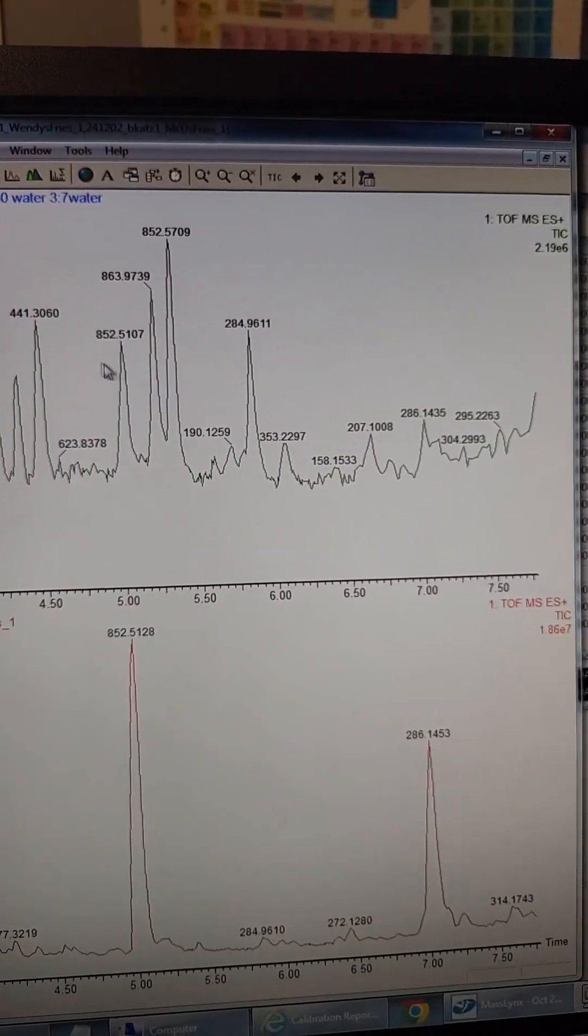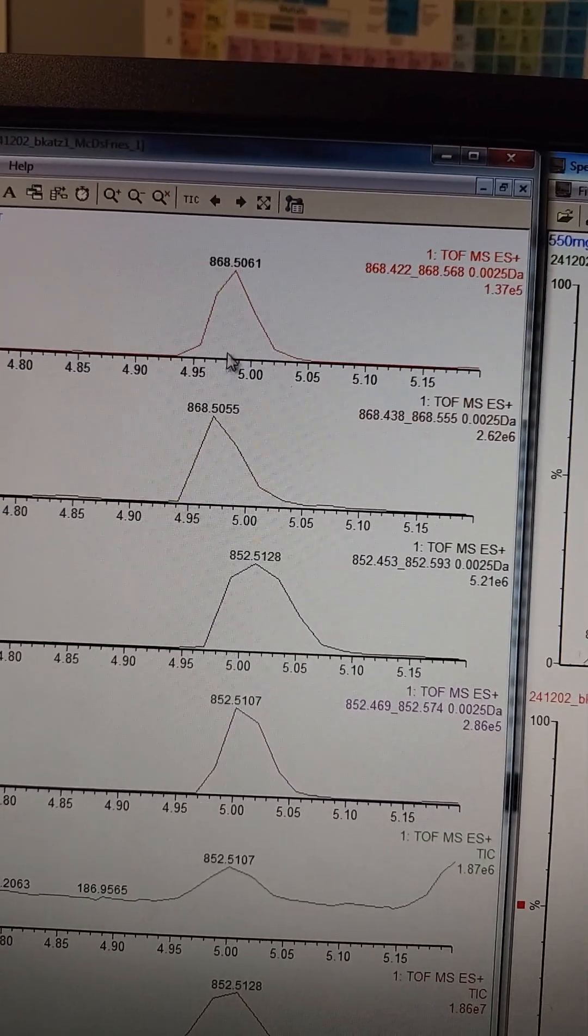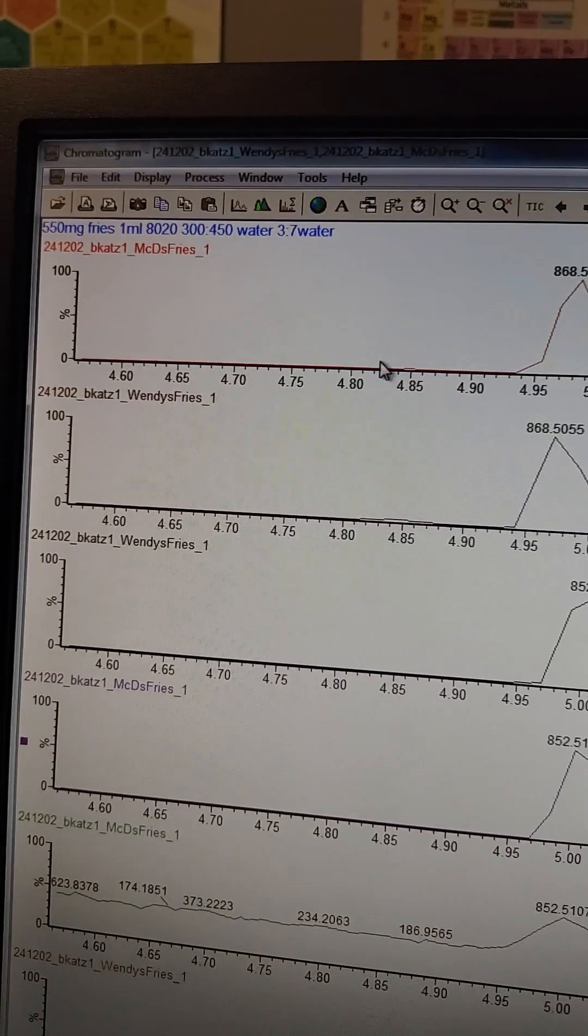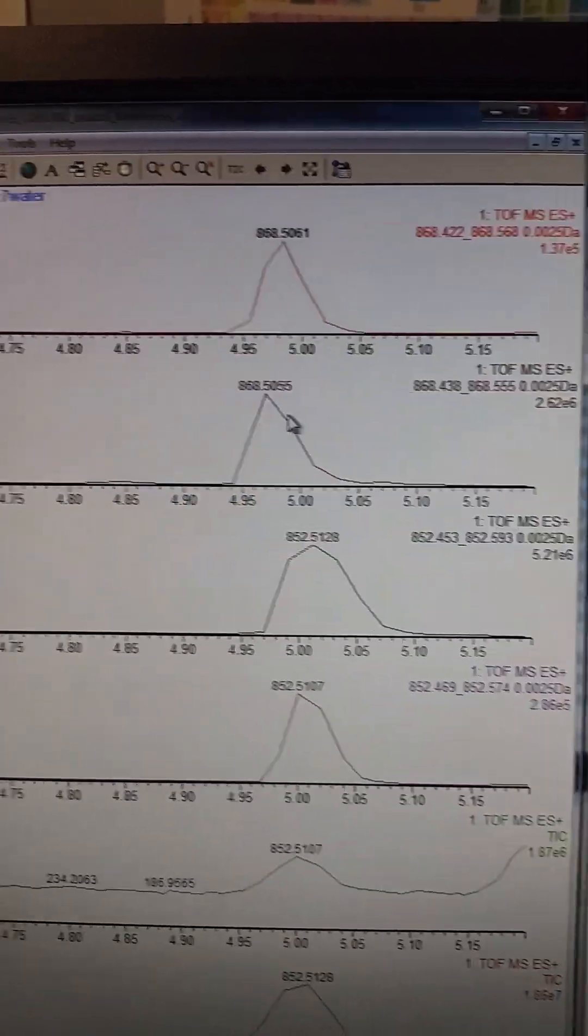I'm going to do an EIC to confirm here. There's the here and you can see. Alright, so there's the 868 mass we got in the McDonald's french fries. We got 1e to the 5 and we have 2e to the 6 in the Wendy's. I mean that's like 2000x.